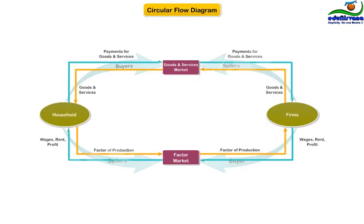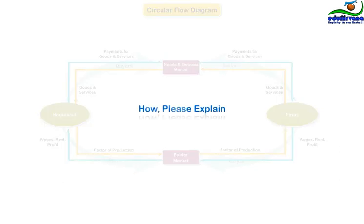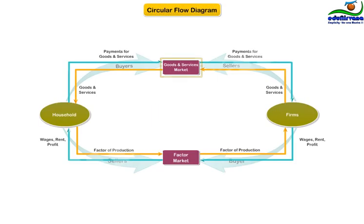We can also understand GDP through this circular flow diagram. From the market for goods and services perspective, the total spending that households make is GDP. This is obviously the same as the revenue that firms get from households.